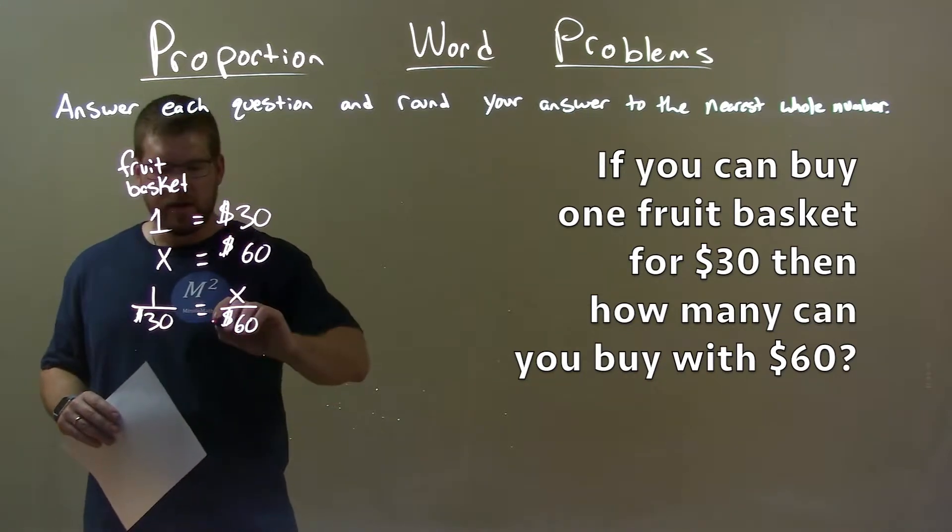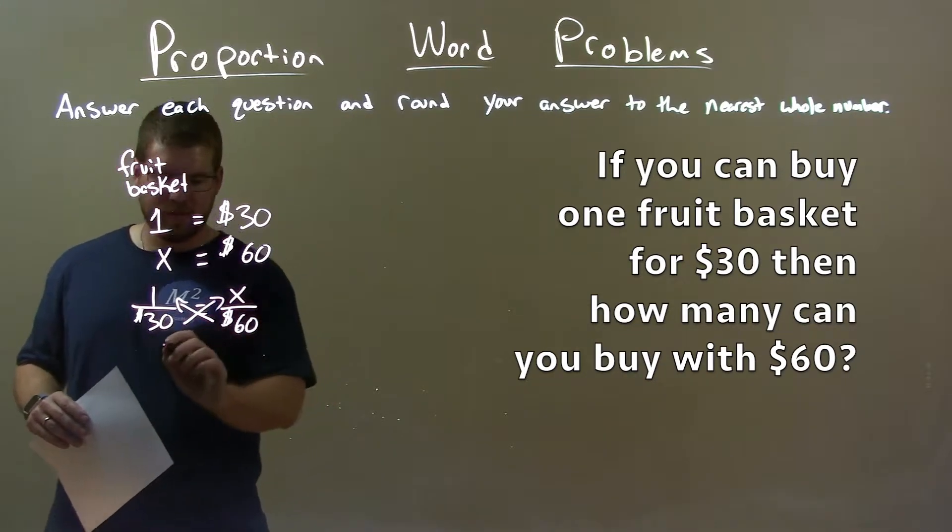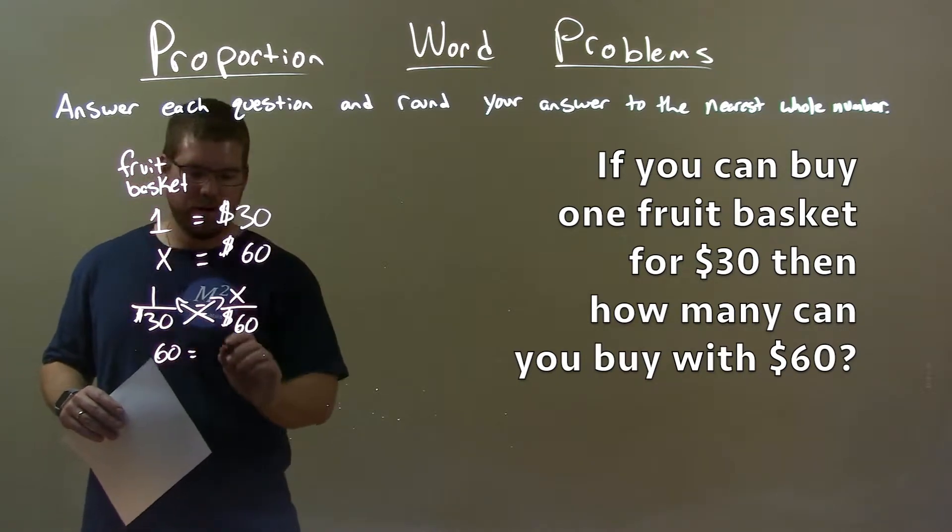Now, let's cross multiply. We cross multiply here. 1 times 60 is 60, and 30 times x is 30x.